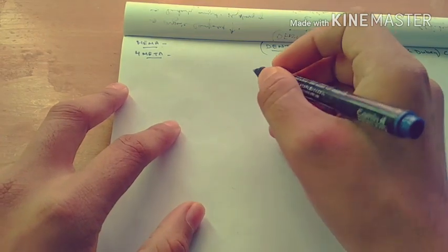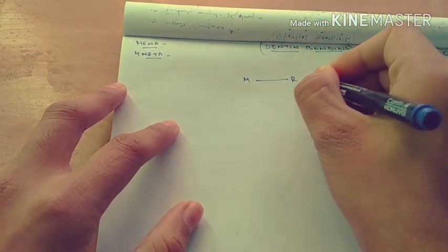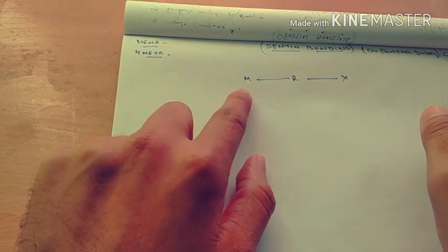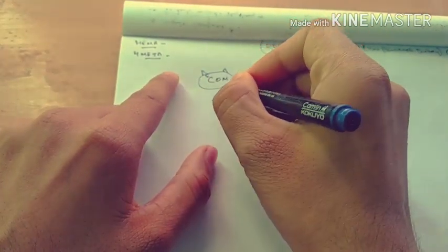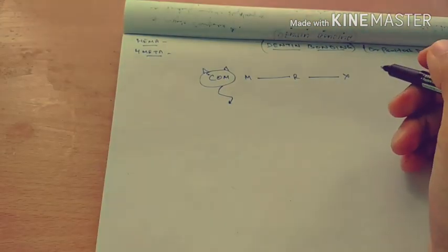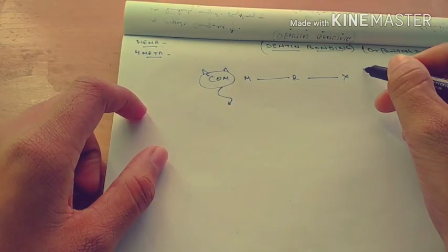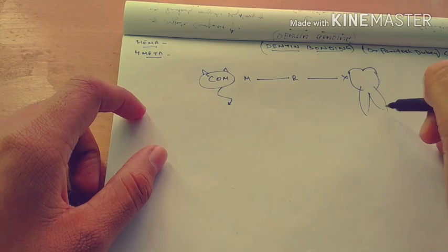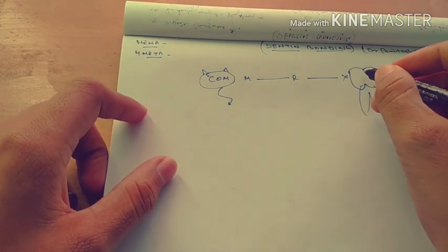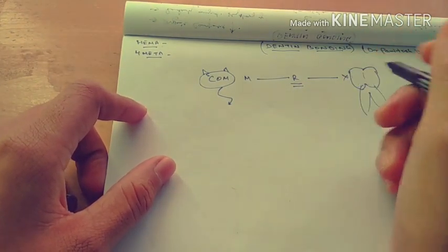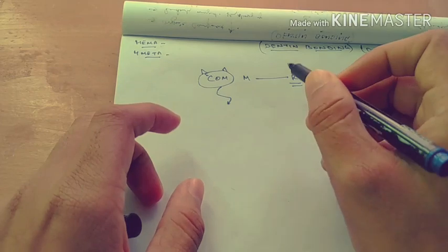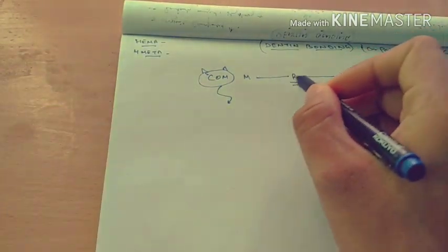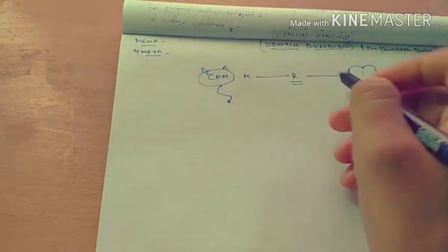First, let me show you the arbitrary structure — a rough idea about how a dentin bonding agent works. It can grossly be described as M-R-X, where M is the double bond of the methacrylate polymer, which polymerizes with the composite molecule. The X end is the hydrophilic end, which bonds to the tooth structure. And R is the chain or spacer, which makes this molecule overall a large molecule, bridging the space between the tooth and the composite.